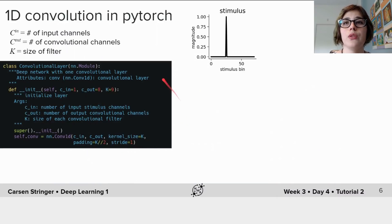So how do we compute a convolution in PyTorch? We're going to create a convolutional layer which in this case takes as input a stimulus which looks like this, where it's zero everywhere except for one in the bin where the stimulus was active.